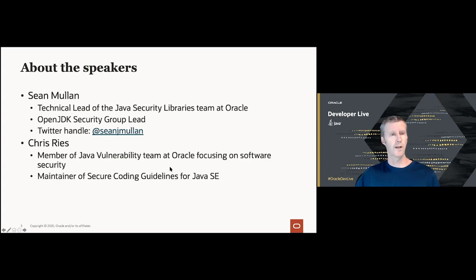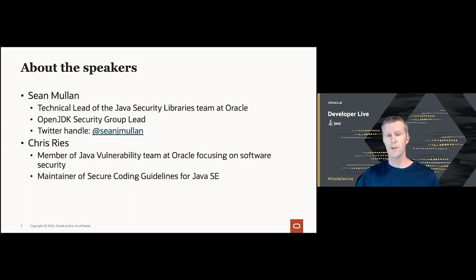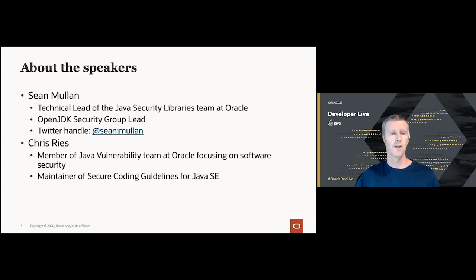A little bit about the speakers today. My name is Sean Mullen. I'm the technical lead of the Java Security Libraries team at Oracle and also the OpenJDK security group lead. I mostly tweet about Java security technology. Chris is a member of the Java vulnerability team at Oracle, focusing on software security, and is the primary maintainer of the secure coding guidelines for Java SE.